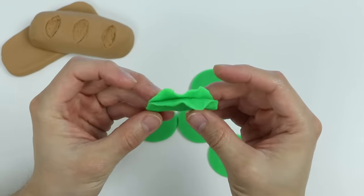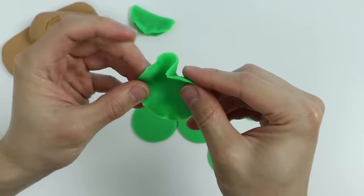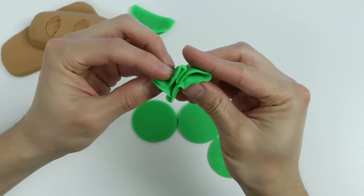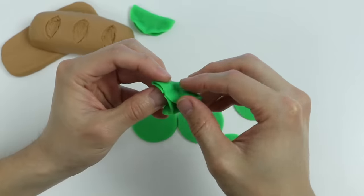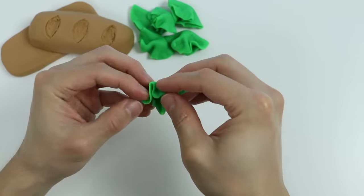Now let's wrinkle the edges and then fold it up. Perfect, we made a piece of lettuce. Now let's do the same for the rest of these green circles. It almost feels like we're making dumplings, but all these pieces don't need to look identical, so feel free to make them however you like.